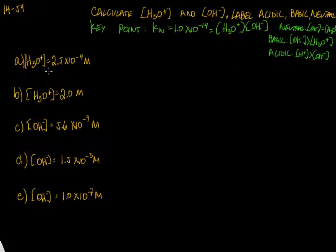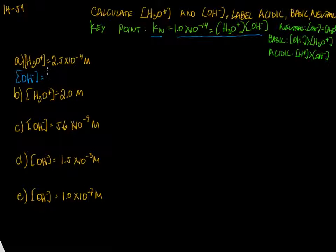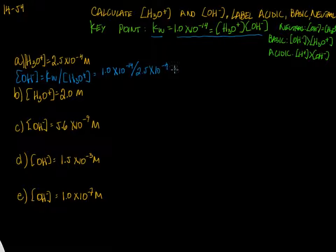So let's get started. In part A we have [H3O+] = 2.5×10⁻⁴ M. We solve for hydroxide: [OH-] = Kw / [H3O+] = 1×10⁻¹⁴ / 2.5×10⁻⁴. On the calculator that gives 4, but to 2 sig figs we get 4.0×10⁻¹¹. Since H3O+ concentration is greater, we label the solution as acidic.